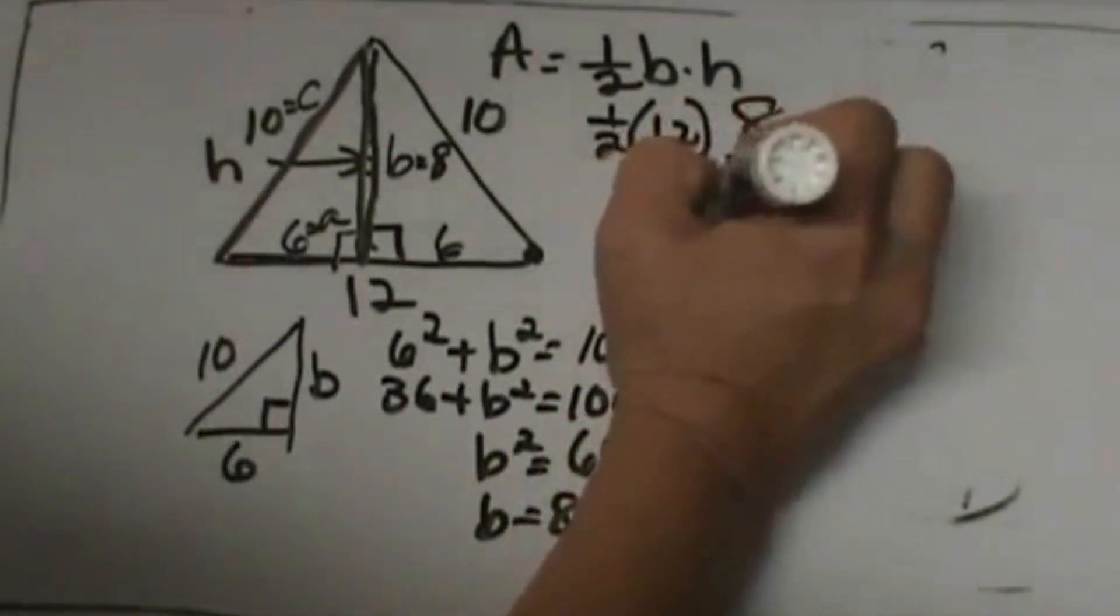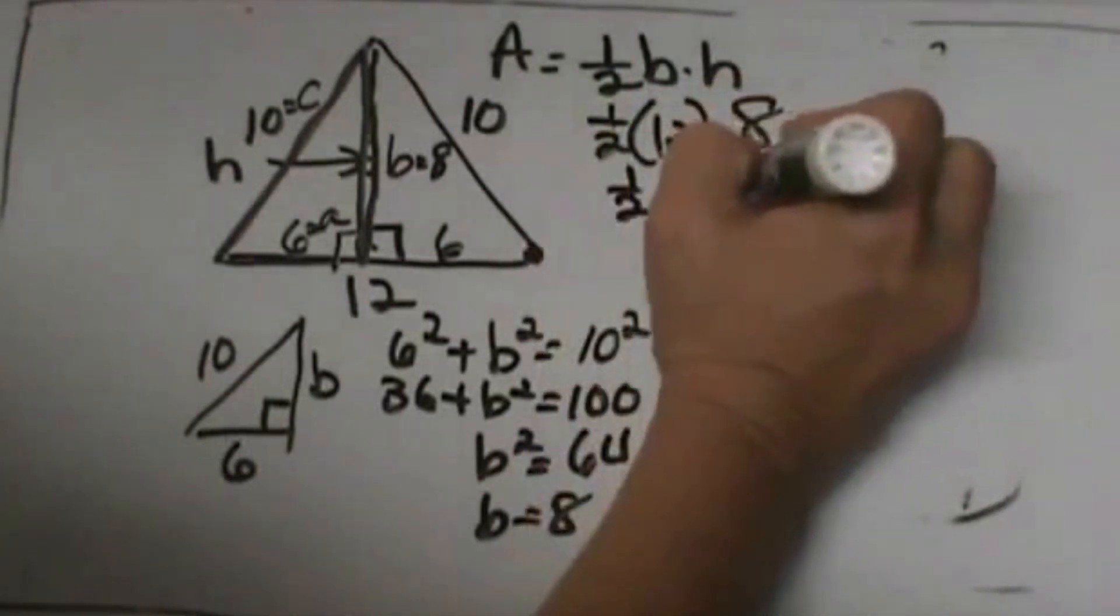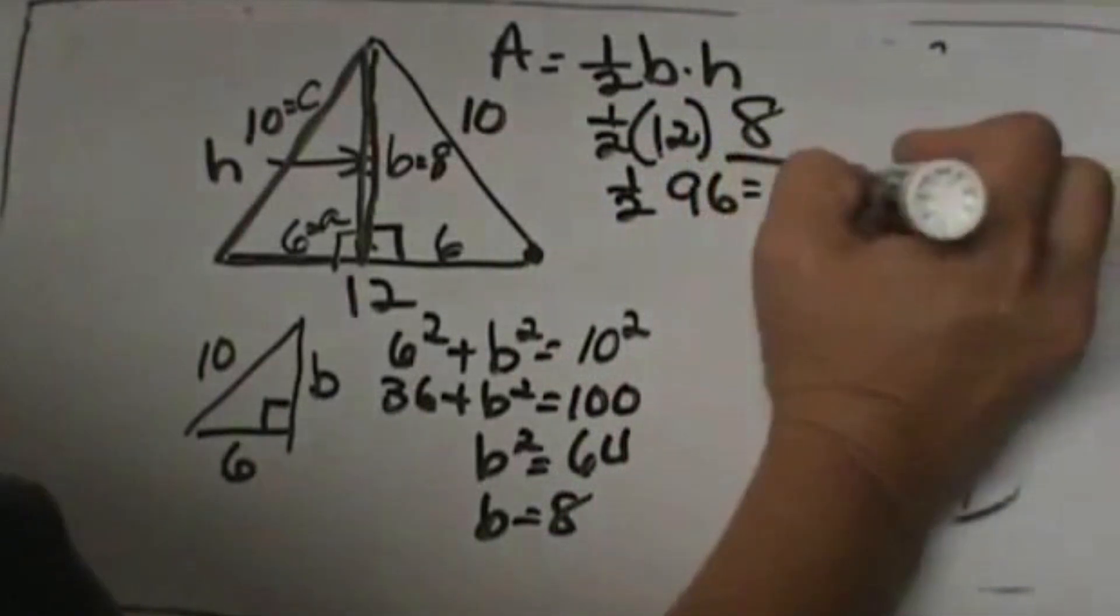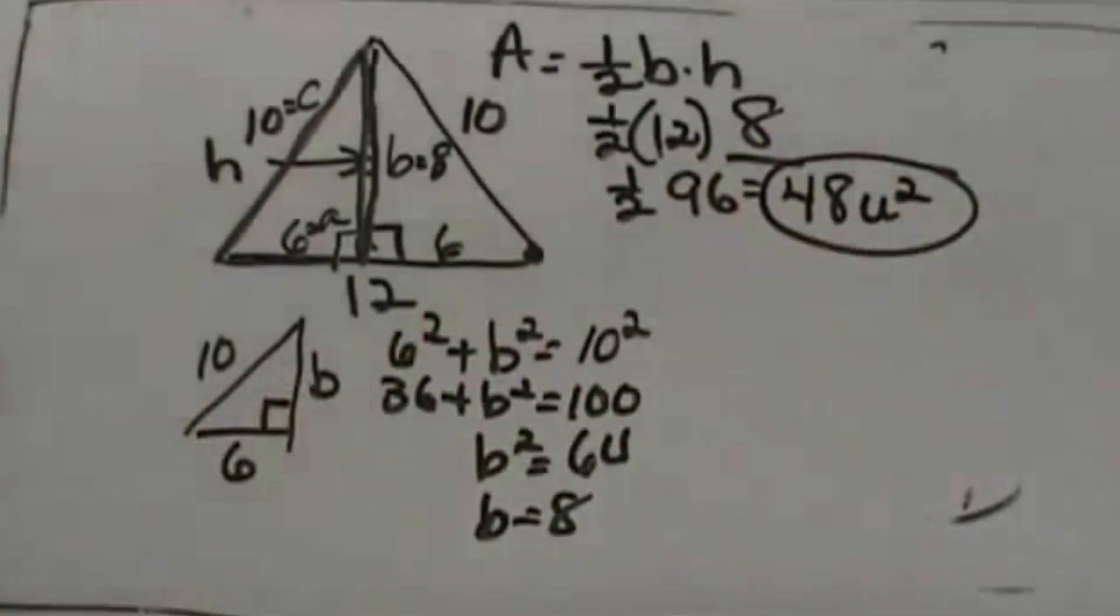So 12 times 8 is 96 and half of 96 is 48. That's going to be 48 square units for the area of that isosceles triangle.